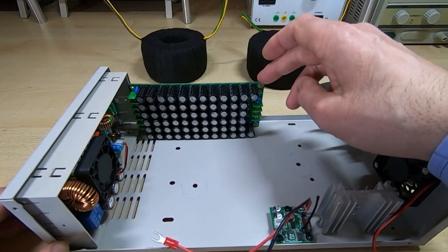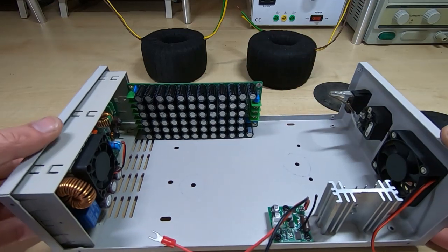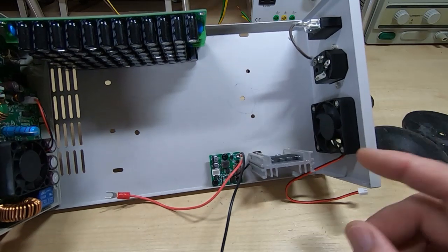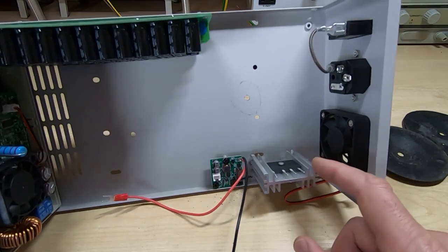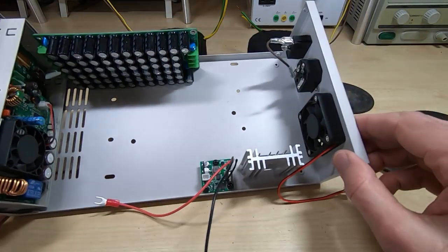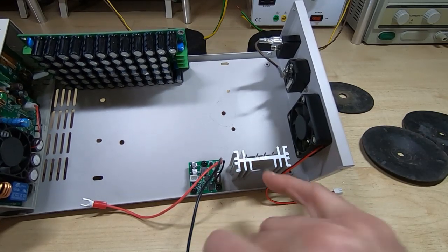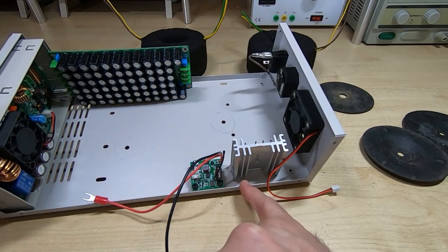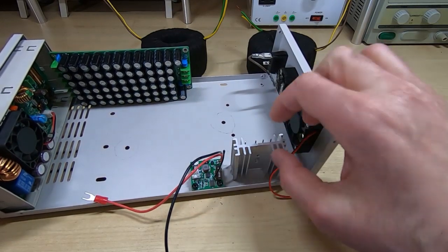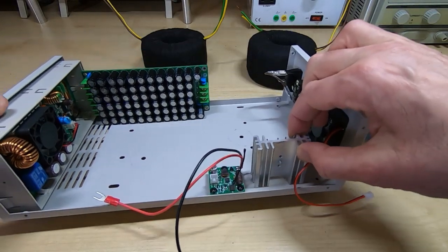The other thing I've done is to find a way to mount the heatsink for the rectifier. What I've done is on the bottom end of these slots I've tapped them M3, drilled a couple of holes in the base of the case, and this is now screwed firmly to the bottom of the case.